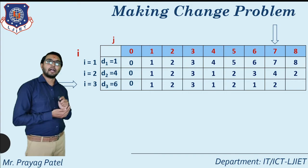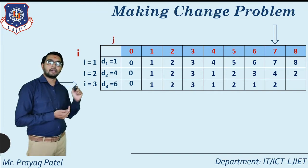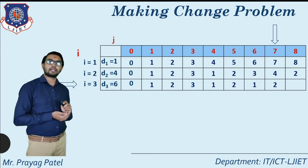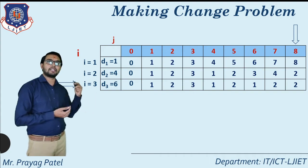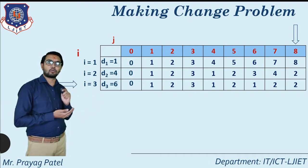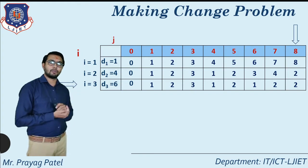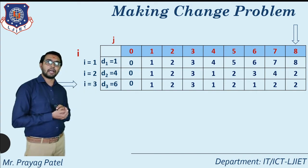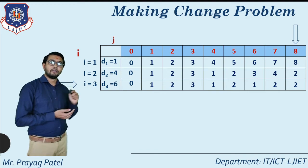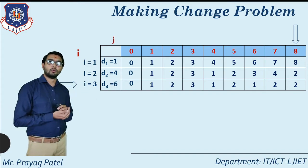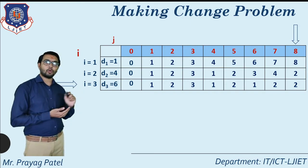C[3][7]: for change of 7, select 1 coin of denomination 6 and 1 coin of denomination 1, so total coins equal 2. C[3][8]: for change for 8 with all coins available, possibilities include 8 coins of denomination 1, 2 coins of denomination 4, or 1 coin of denomination 6 and 2 coins of denomination 1 giving total 3. The minimum is 2, so we select 2 coins of denomination 4. You can find this solution directly, but in an exam you must write and solve using the equation.